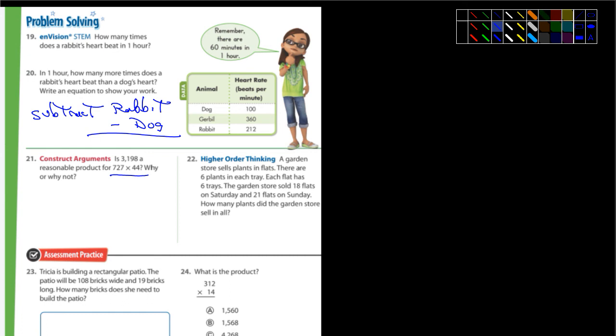So it sells plants in flats. And it says there are six plants in each tray. And each flat has six trays. I'm going to highlight that. Six plants in each tray. Each flat has six trays. And the garden sold 18 flats. On Saturday. And 21 flats on Sunday. So we're talking about two different days here. How many plants did the garden store sell in all? And this one is going to be worth 100 points.